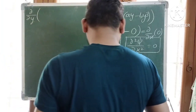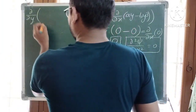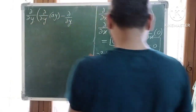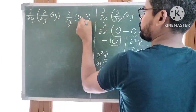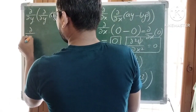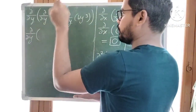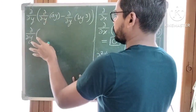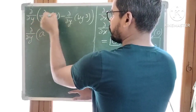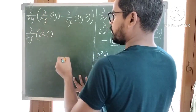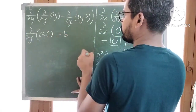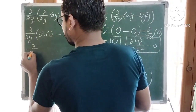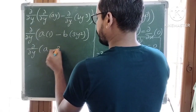So ∂/∂y of (Ay minus By³). ∂/∂y of Ay minus ∂/∂y of By³. We are doing partial differentiation with respect to y, so all other terms are constant. A is constant, and the derivative of y is 1. So A times 1 minus, here B is constant, and the derivative of y³ is 3y². So we get A minus 3By².